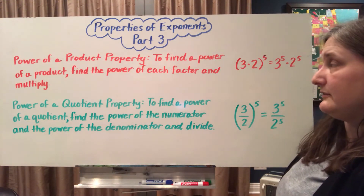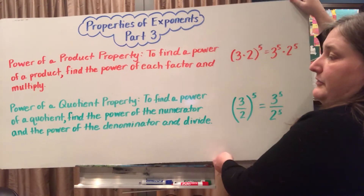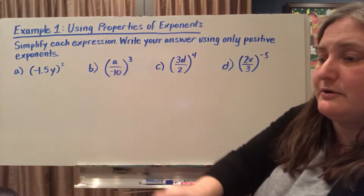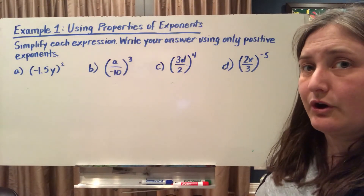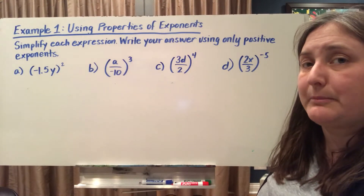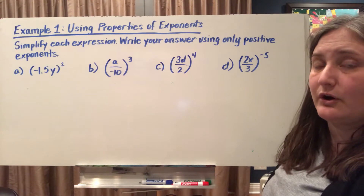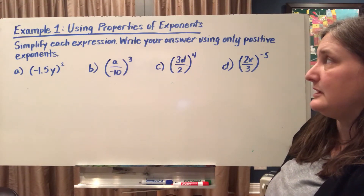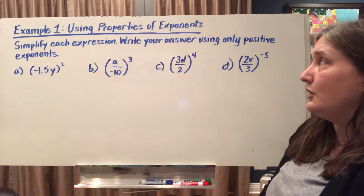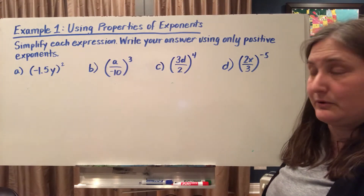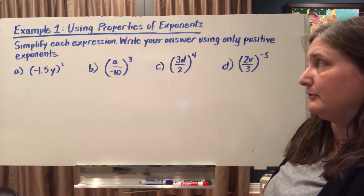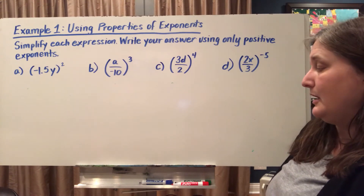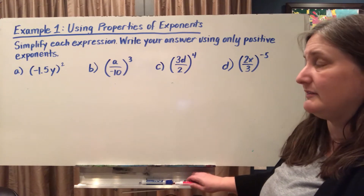These properties are extremely useful when we have problems that have variables in them. Because if we don't know the value of a variable, we can't usually go much further unless we have a property or a rule that we know applies to all exponent problems. So here we're being asked to simplify each expression and write our answer using only positive exponents. We're going to use our properties to simplify them.